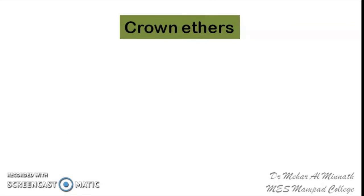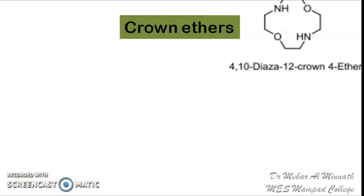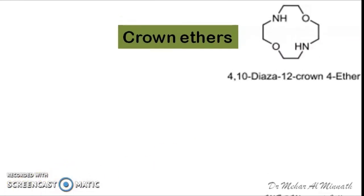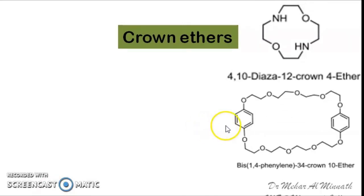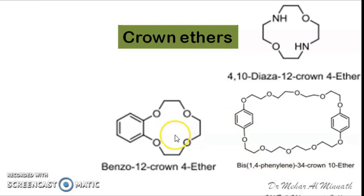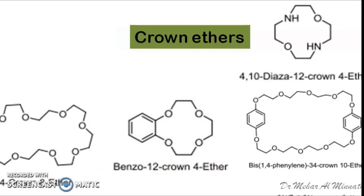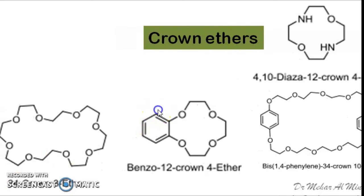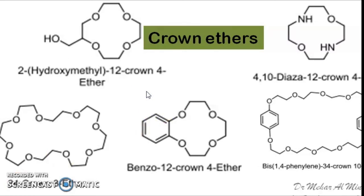Now, crown ethers — we have different crown ethers used as PTCs. Here you have 1,10-diaza-12-crown-4 ether. Another example is tetraphenylene-34-crown-10 ether. Another example is benzo-12-crown-4 ether. You also have 24-crown-8 ether, and 2-hydroxylipyl-12-crown-4 ether. Other than these, we have got different types of crown ethers which are used as PTCs.